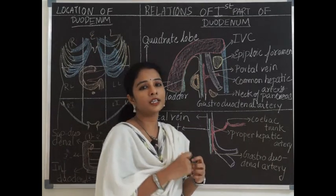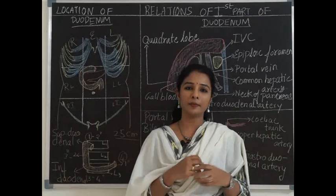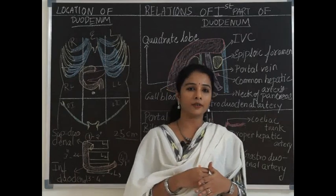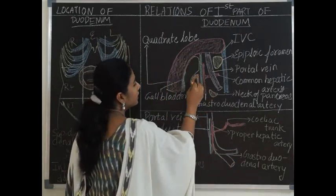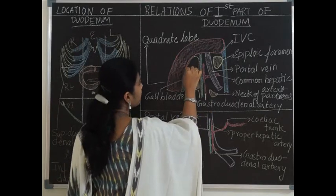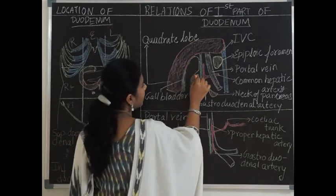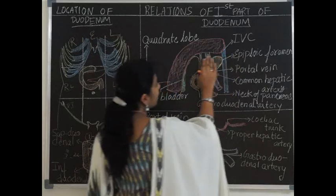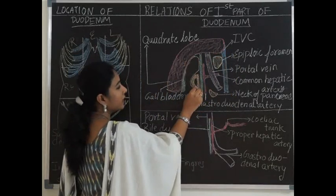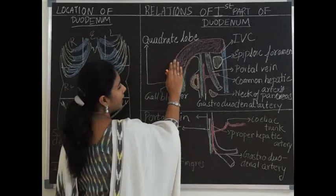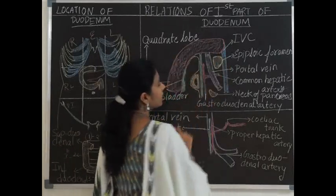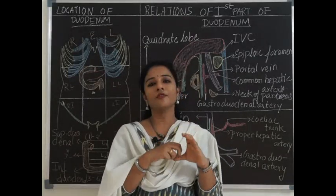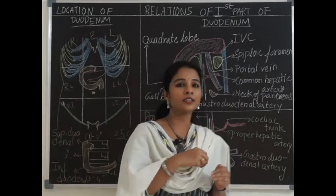The first part of duodenum: the initial one inch is covered by peritoneum and the distal one inch is retroperitoneal. The duodenum is a C-shaped organ where within the concavity of the C, the head and neck of the pancreas are related. Anteriorly the first part is covered by the peritoneum.